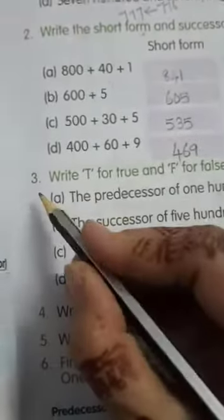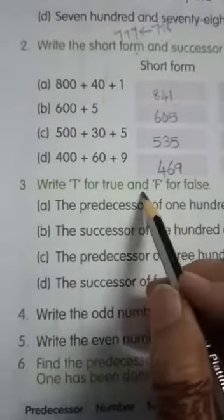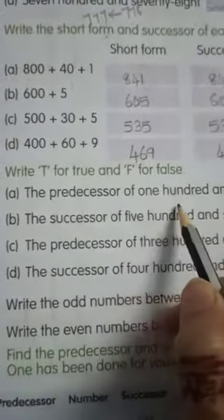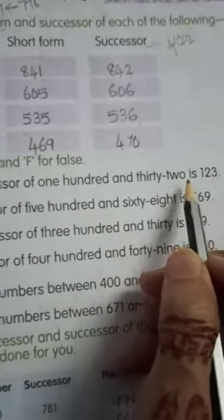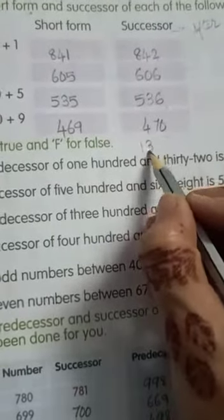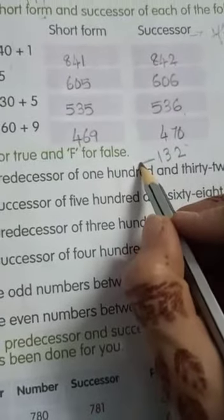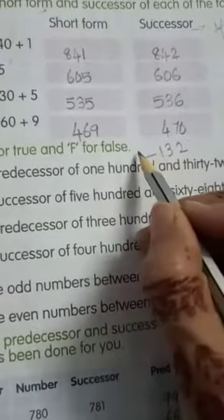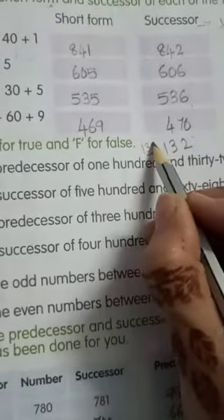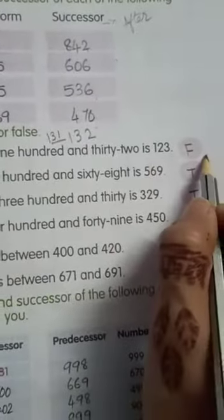So we have to start the third question: write T for True and F for False. The predecessor of 132 is 123. Predecessor is nothing but the before number, so what is the predecessor of 132? It is 131. But it is given here as 123, so it is False.